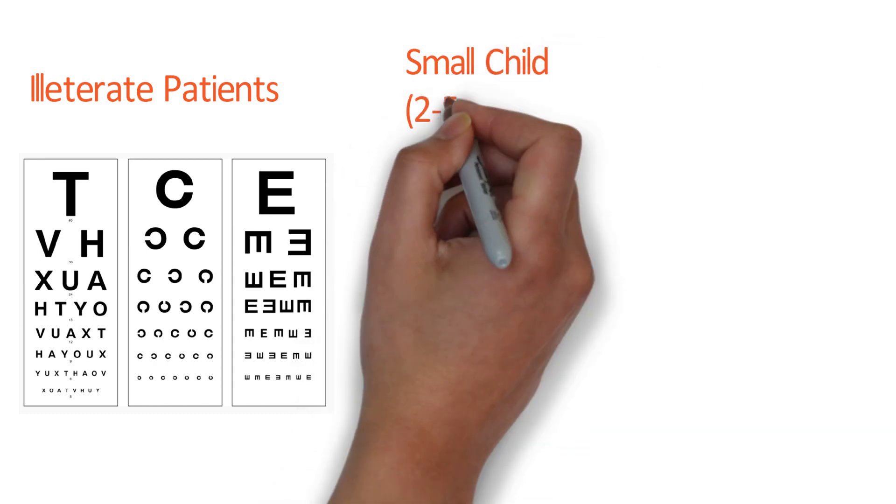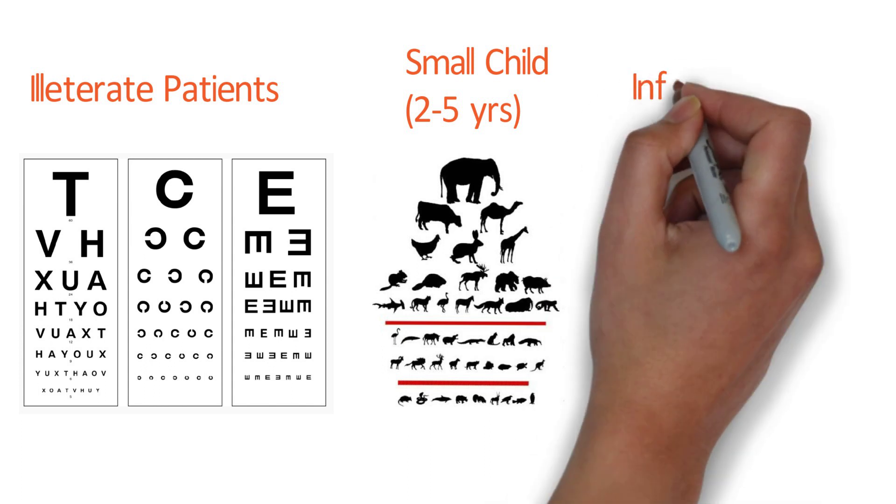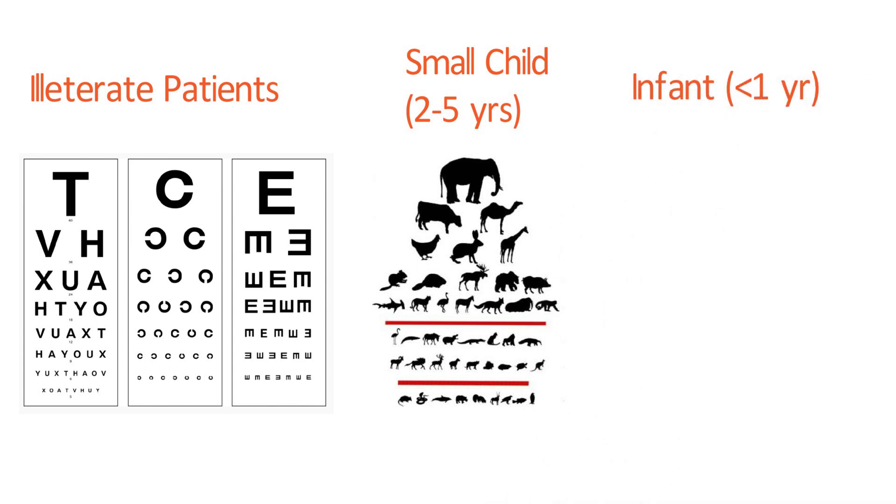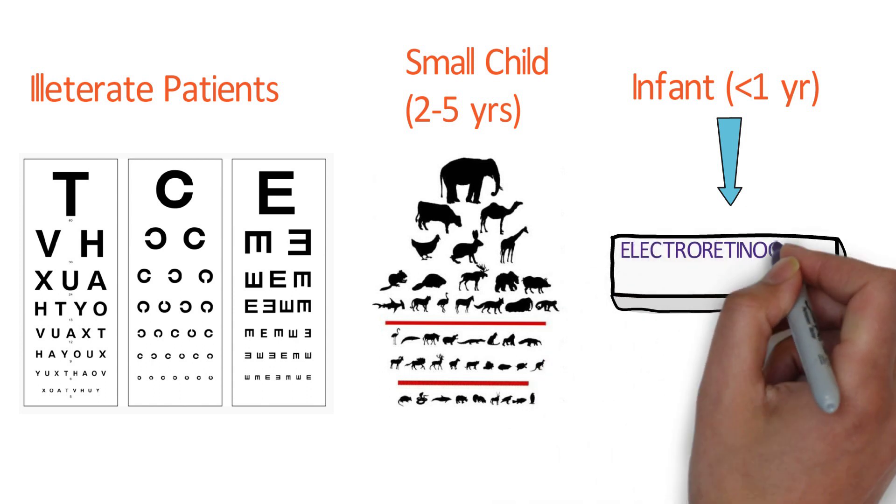For small children, 2 to 5 years, picture chart is used. For infants less than 1 year, we use ERG for testing visual acuity. ERG stands for Electroretinogram.